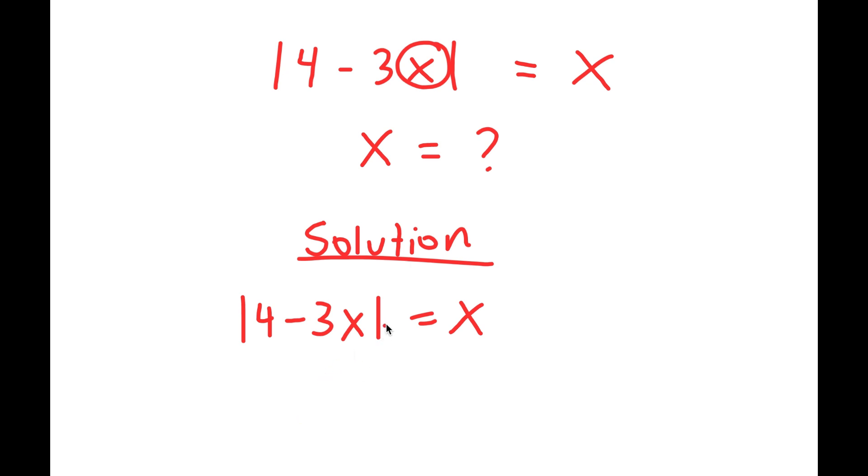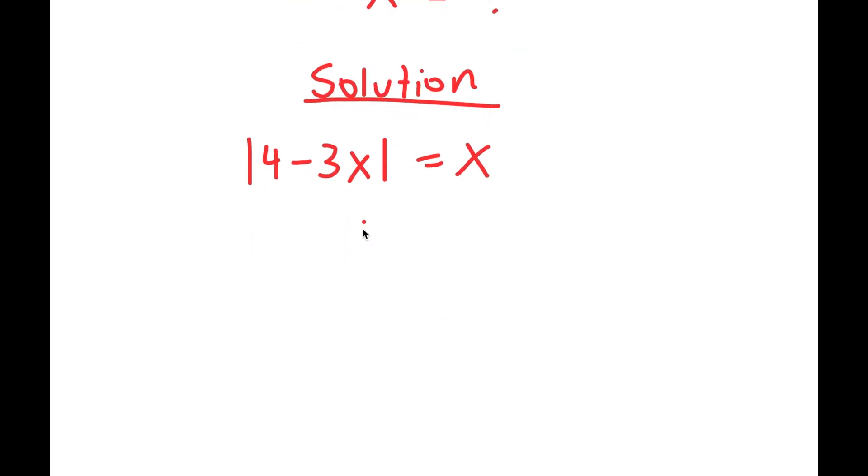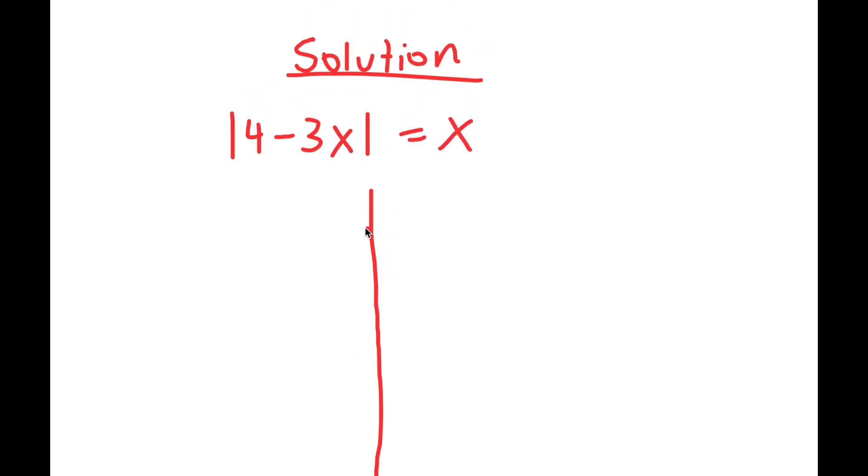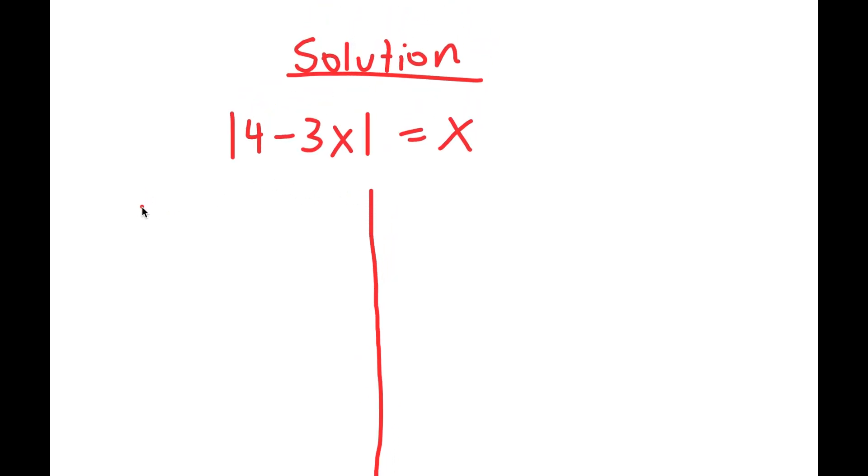That's to break this equation down into two different parts. The first equation I'm going to get from this is 4 minus 3x equals x, and the second equation is 4 minus 3x equals negative x.